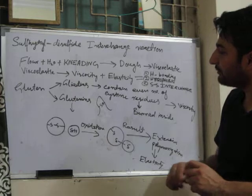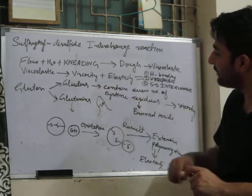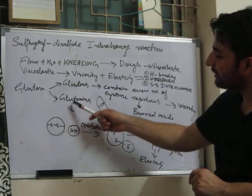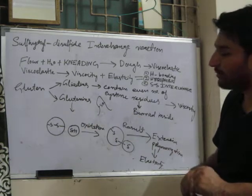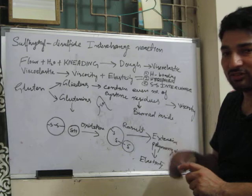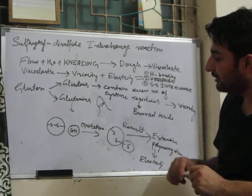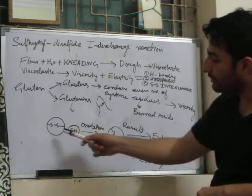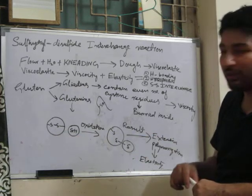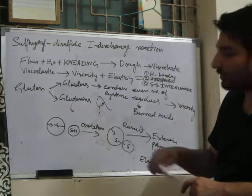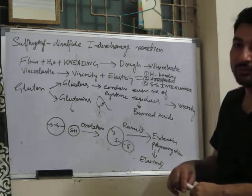These sulphide disulphide interchange reactions are wholly and solely related to the glutenin. The glutenin protein also contains cysteine — sulphur-containing amino acid residues — and here also we have disulphide bonds present. But fortunately, we also have free SH groups.